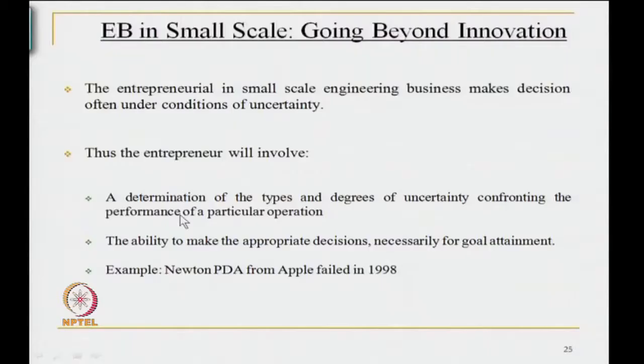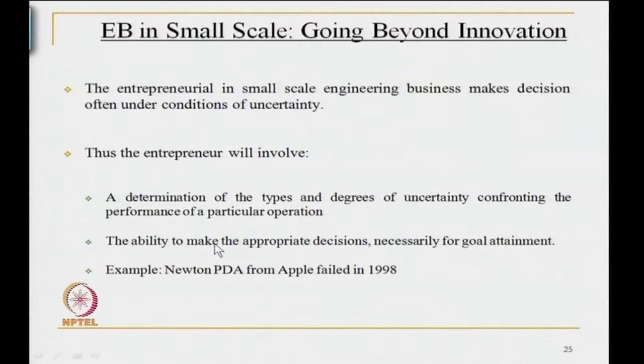If the endemic condition is uncertainty, the ability to take huge risks gets reduced. Thus, the entrepreneur will need a determination of the types and degrees of uncertainty confronting the performance of a particular operation. Anyone in the small sector must be conscious of the uncertainty confronting performance. The ability to make appropriate decisions is necessary for goal attainment, which is where management as a discipline becomes hugely important for running entrepreneurial firms. An example is the Newton PDA from Apple, which failed in 1998.